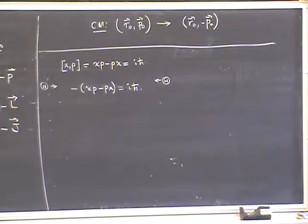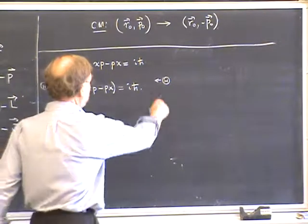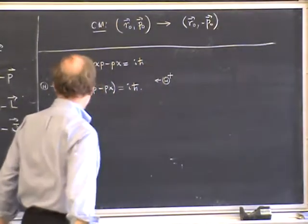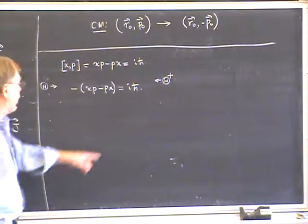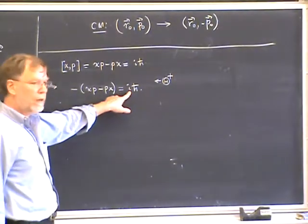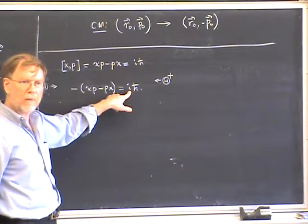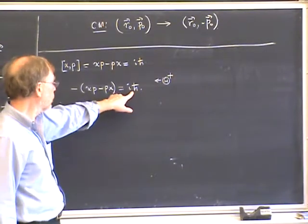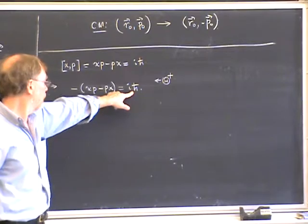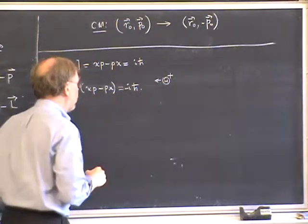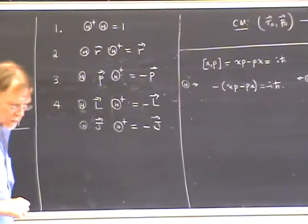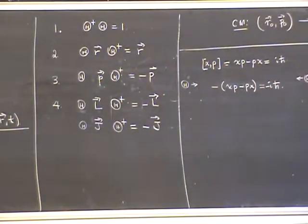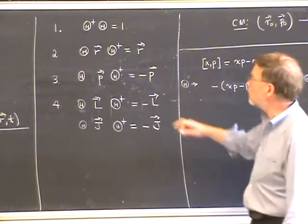However, if the time-reversal operator is anti-linear, then it changes the sign of i when pulled through it—it introduces a complex conjugation. For an anti-linear operator we get a minus sign there, and the result is that the canonical commutation relations are preserved. So we conclude from these requirements that theta must be an anti-linear operator—in fact an anti-unitary operator.